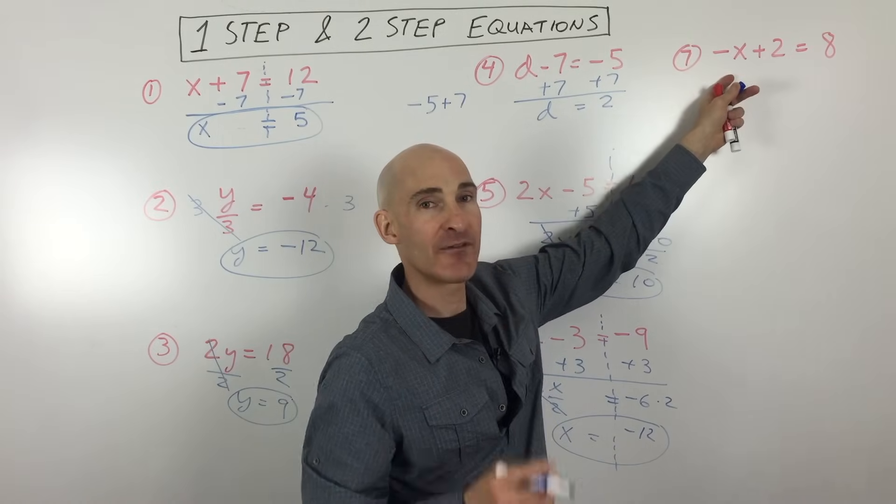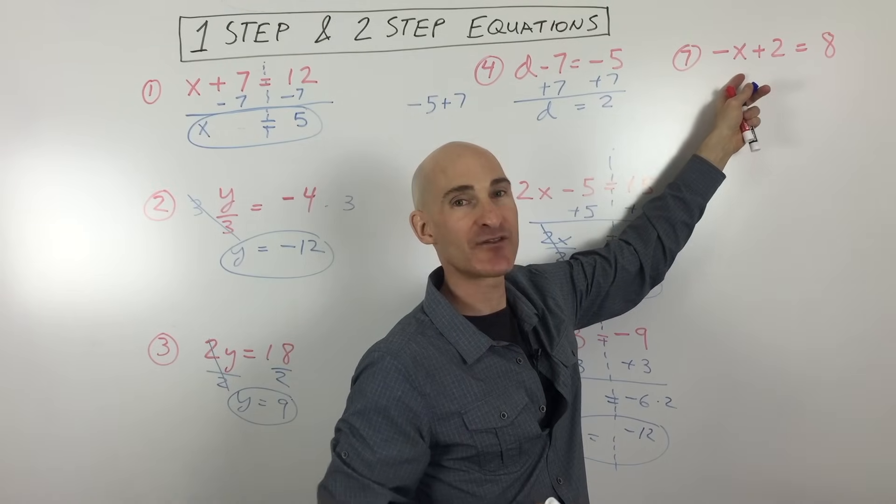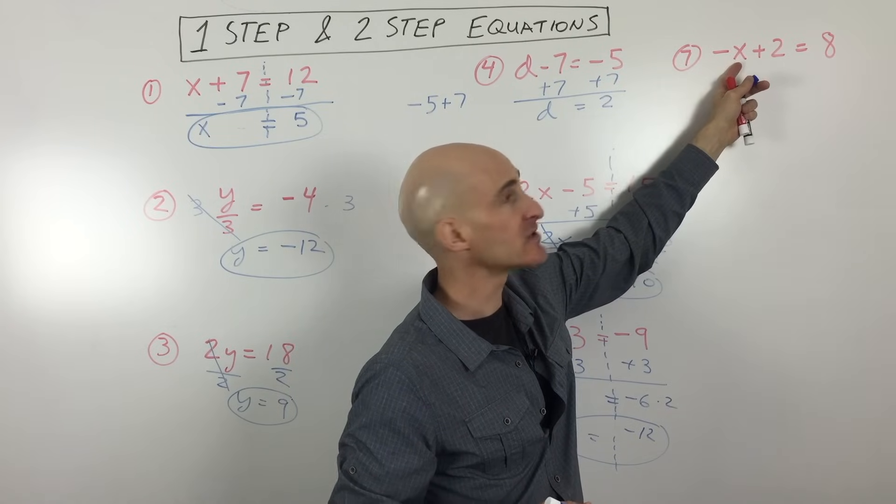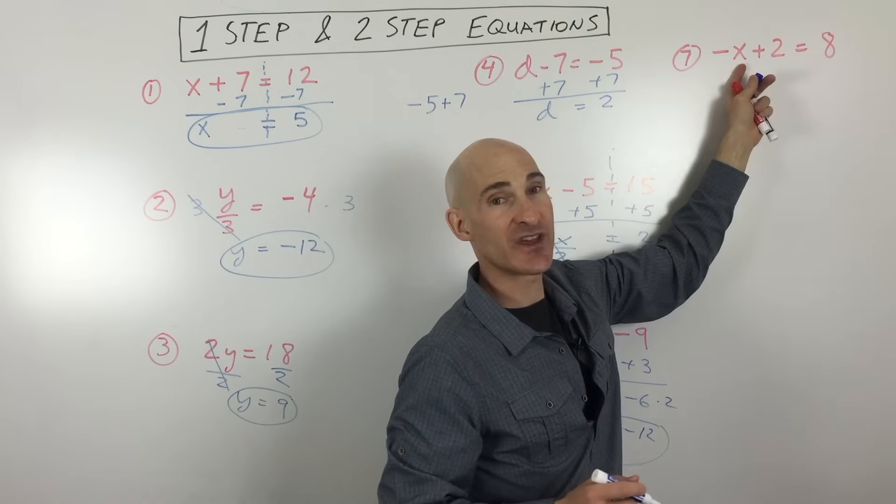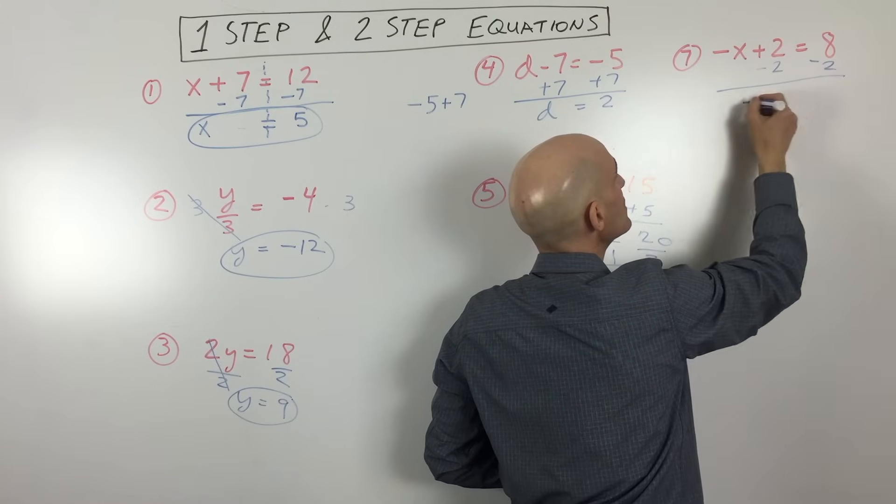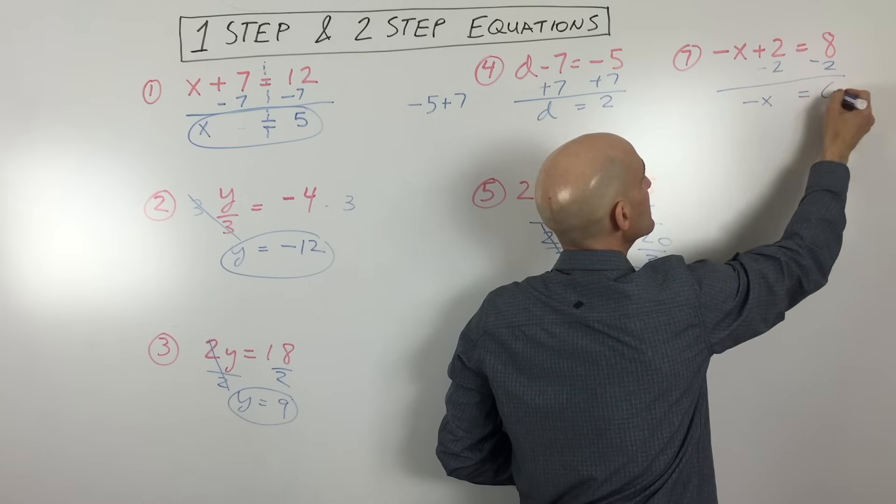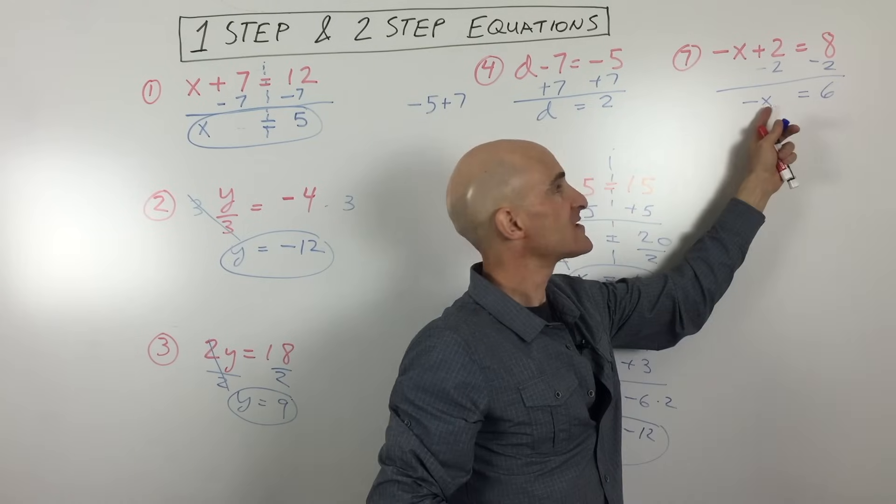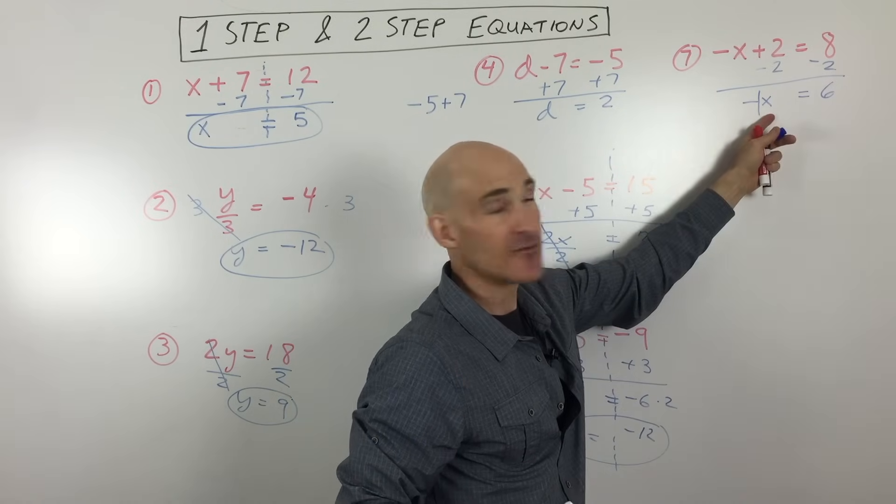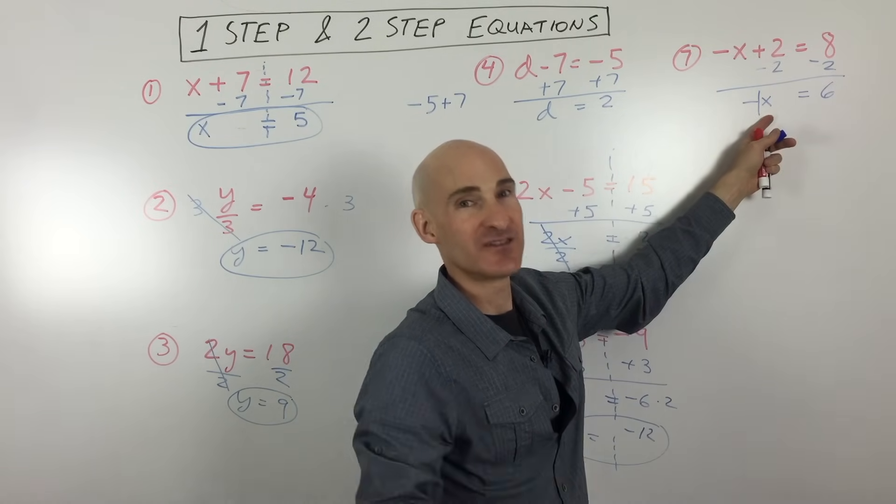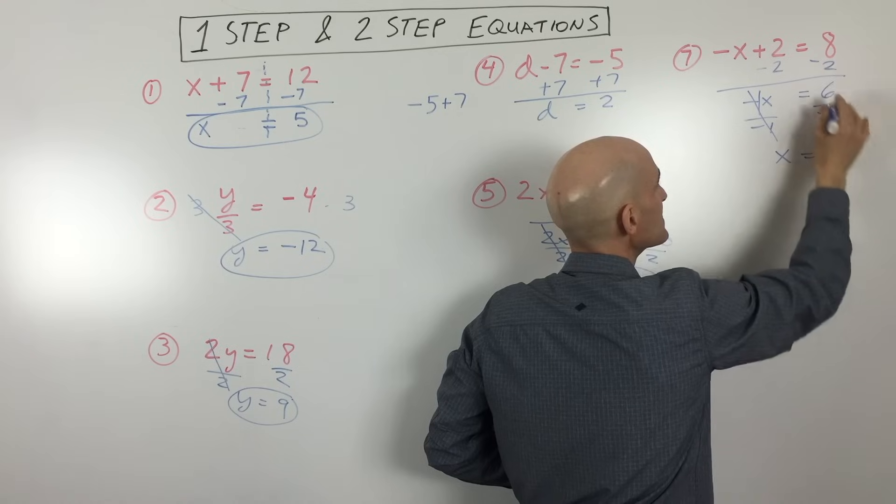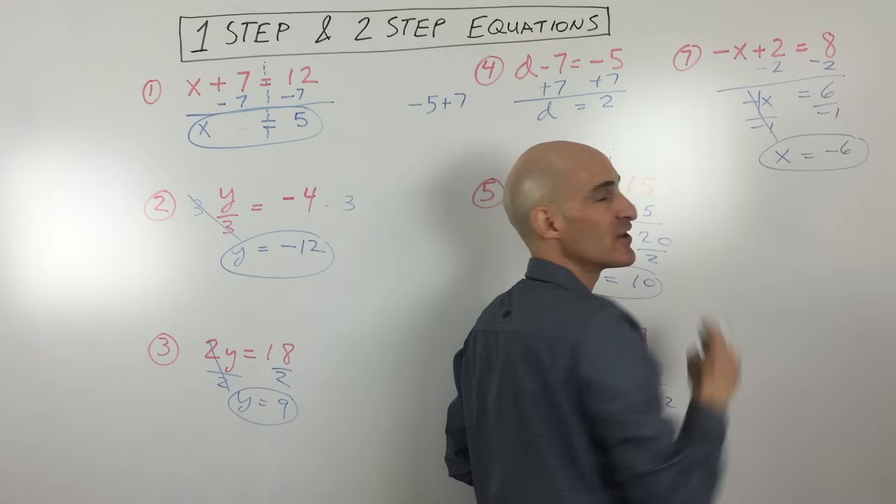Last example. I'm going to have a video on multi-step equations. You can check that out after this video. I'll have a link to that. But this last example, we're just going to solve for x. We want to get the numbers on one side, variables on the other. We're trying to separate them. So I'm going to subtract 2 from both sides of the equation. So we get negative x equals 6. Now, when you see this negative x, this is really like a negative 1 times x. So what's the opposite of multiplying by negative 1? Dividing by negative 1. So we're going to divide both sides by negative 1. Those are going to cancel one another out. And we get positive 6 divided by negative 1 is negative 6. And you've got it.